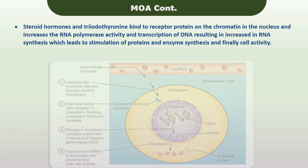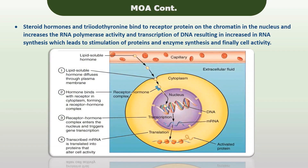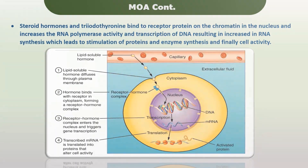Finally, regarding steroid hormones: the mechanism of steroid hormones involves binding to a receptor protein on the chromatin. These lipid-soluble hormones diffuse through the plasma membrane and bind with the receptor in the cytoplasm, forming the receptor-hormone complex. This complex enters the nucleus and triggers gene transcription. The resulting messenger RNA is then translated into proteins that alter cell activity.